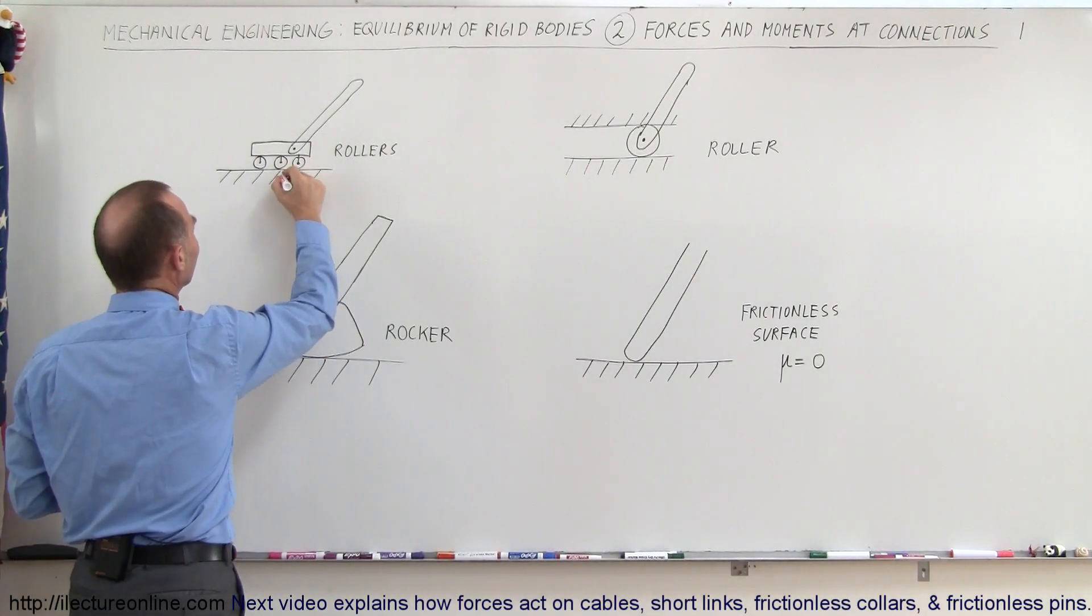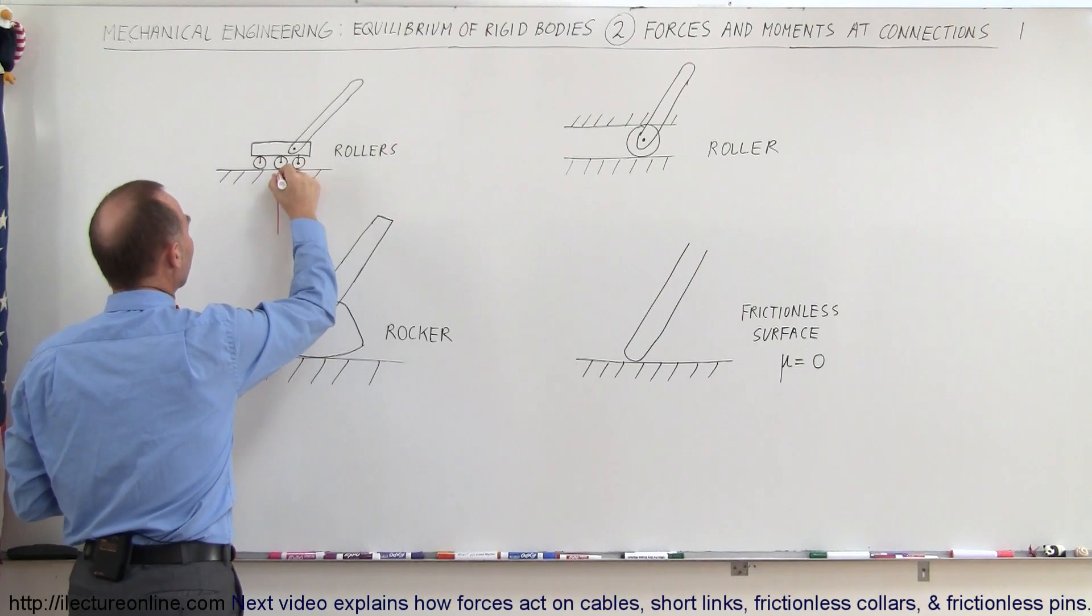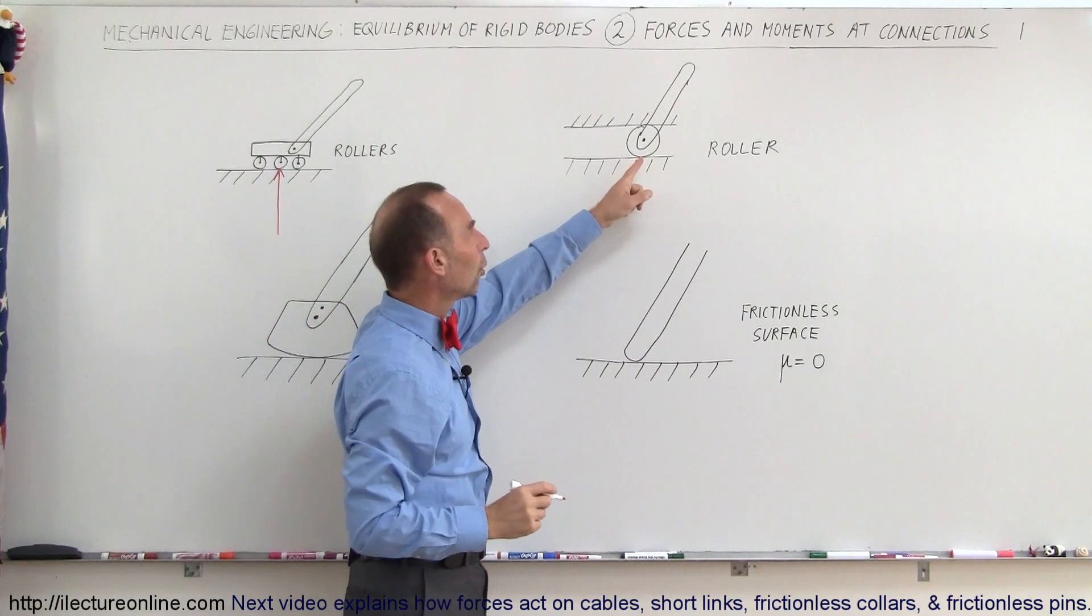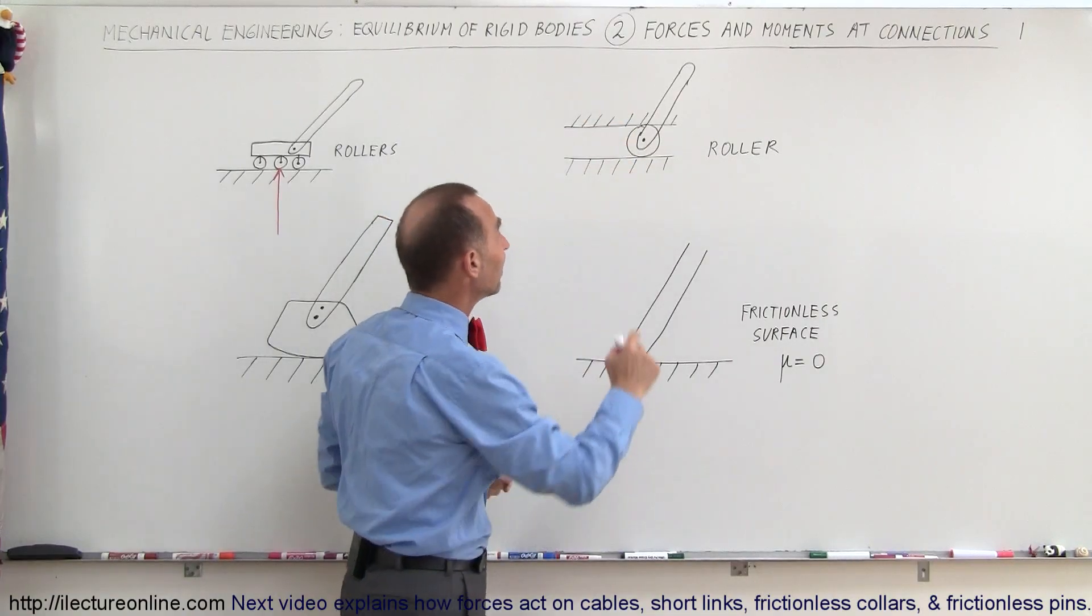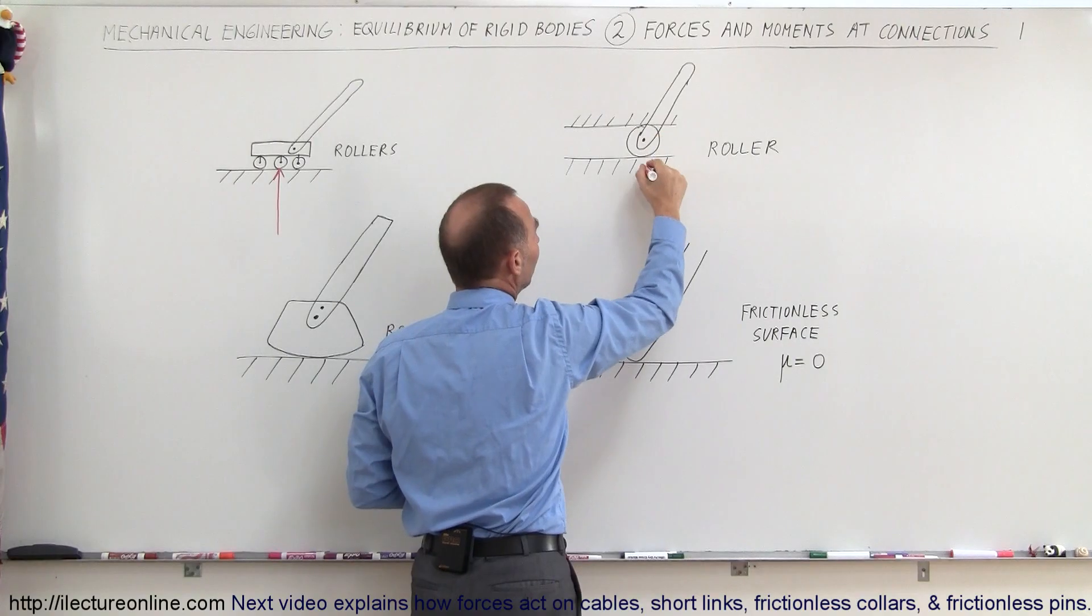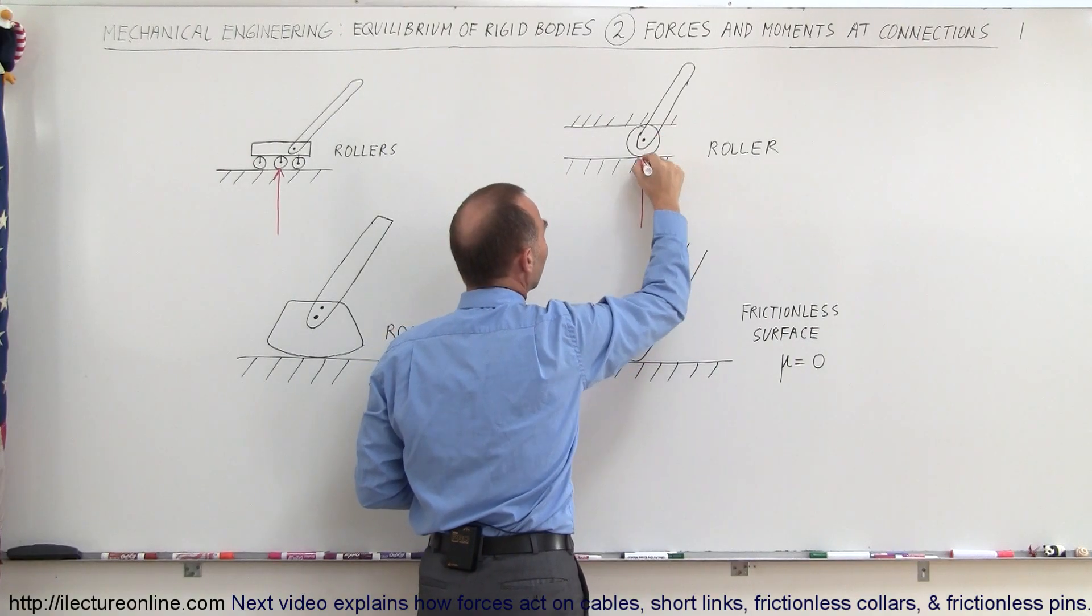For example in this case, when you have rollers like this, the force acting back by the surface here would be perpendicular to the surface. Here between the rollers, since it's supporting all the weight, in this case on the bottom surface, the top surface is simply for guidance, then we know that the force acts in this direction.